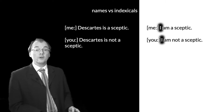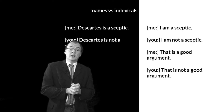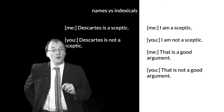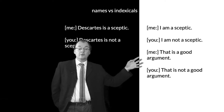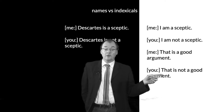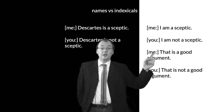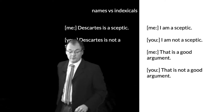We can take this slightly further. You might say to me 'that is a good argument,' and I might say to you 'that is not a good argument.' Here it's unclear whether we've contradicted ourselves — that very much depends on whether when you say 'that' you're demonstrating the same thing that I'm demonstrating when I say 'that.' If we're demonstrating different things, we haven't contradicted each other. If we're demonstrating the same thing, then at most one of what we've said can be correct.